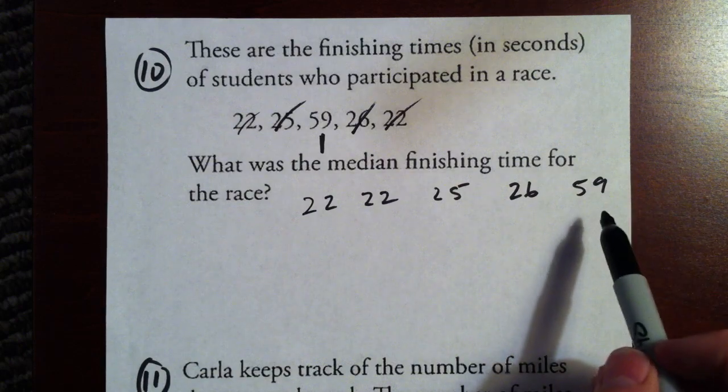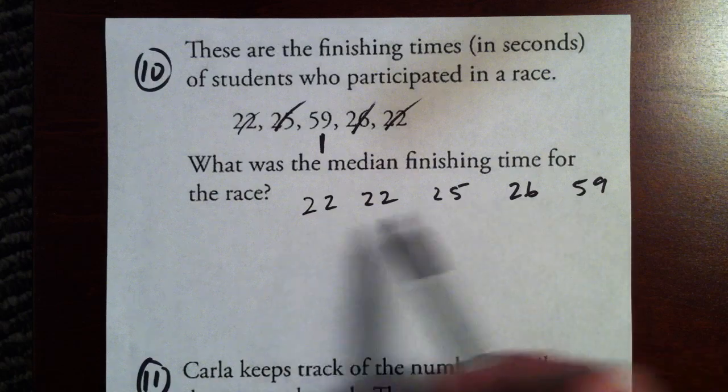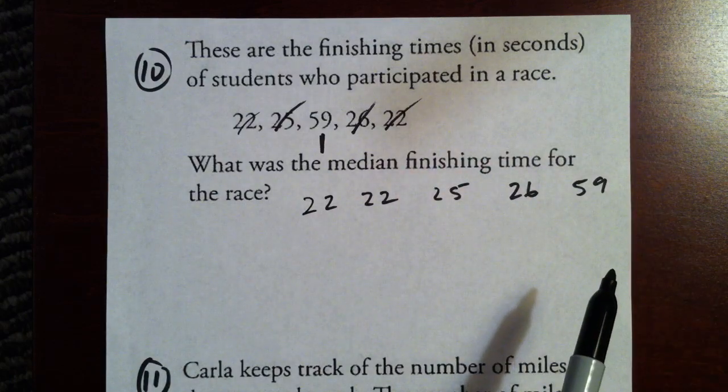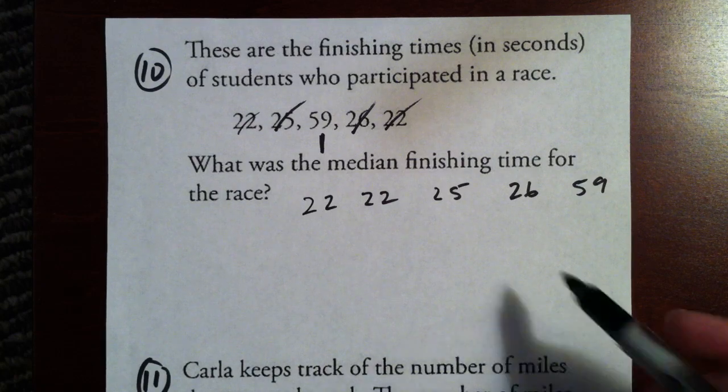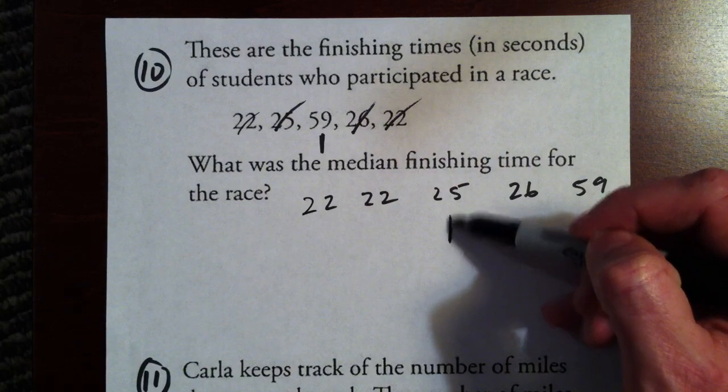And by the way, you might consider that 59 to be what we call an outlier because that's kind of outside the range of numbers we're looking at, kind of outside the normal here. Well it's asking us the median, and the median is the middle number. Well in this case it's 25.